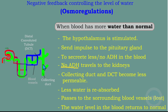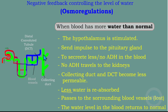Since there is no ADH, no water moves out of the tubule into the blood vessels. Less water is reabsorbed because the blood already has more than enough water. As a result, water is lost through the urine, which becomes more diluted because we are overhydrated. Eventually the water level in the blood returns to normal.